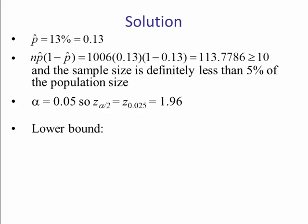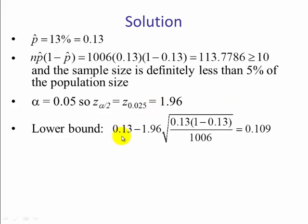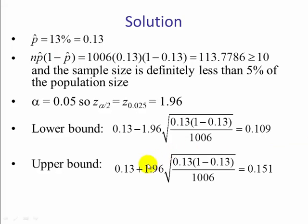So if we put these values into our formula, we get our point estimate, p-hat, 0.13, minus our margin of error, which is the Z score times the standard error. And we end up with 0.109. For the upper bound, we do the same thing except this time we take the point estimate and add the margin of error, and we end up with 0.151. So this is our 95% confidence interval.